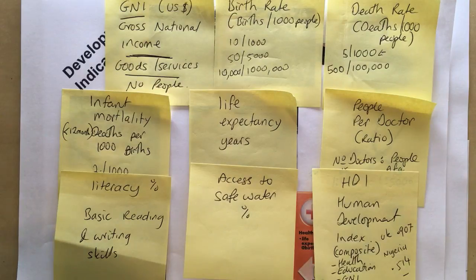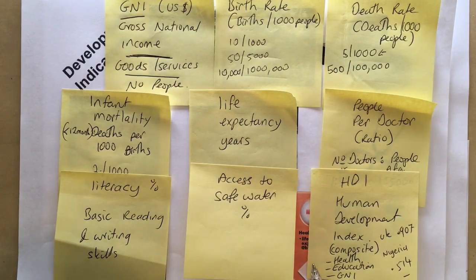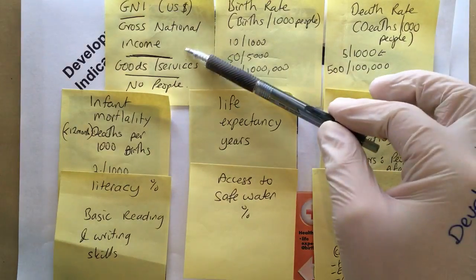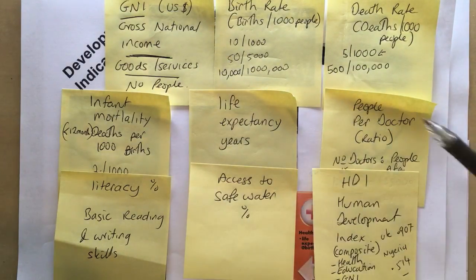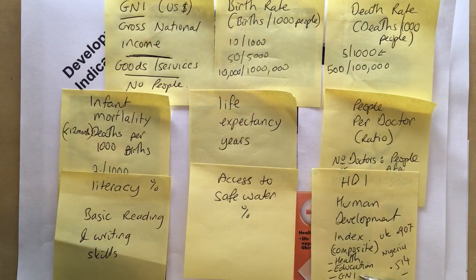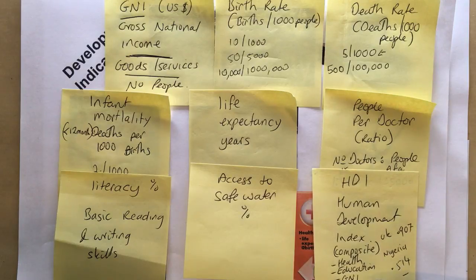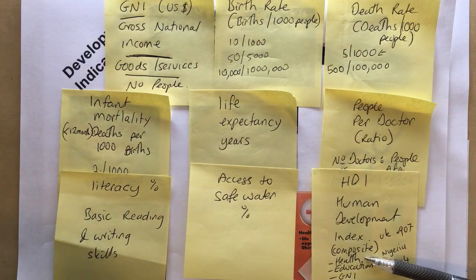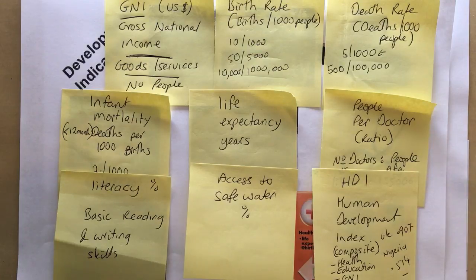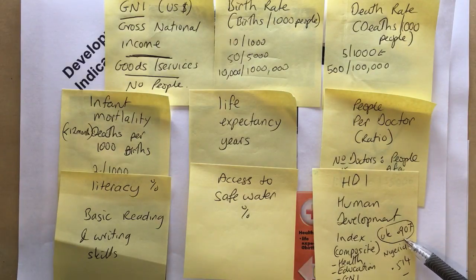The final indicator is the HDI — the Human Development Index. It's called a composite index because it's made up of different parts: health, education, and GNI. While each individual indicator is useful, there can be discrepancies between them — for example, the death rate might be very high while the literacy rate is very low. The HDI helps even out those anomalies. Through statistical analysis using various formulas, it produces a number: the higher the number, the more well-developed the country is.